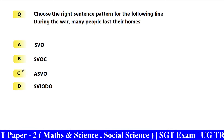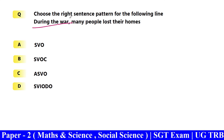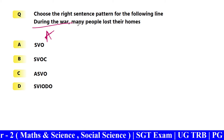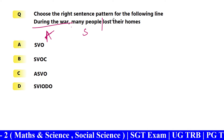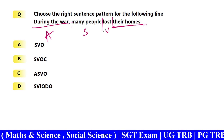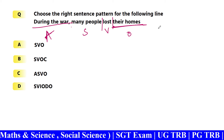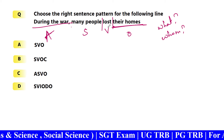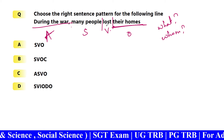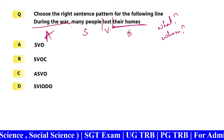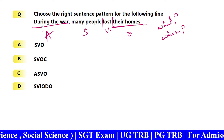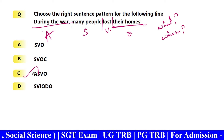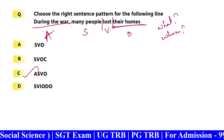Choose the right sentence pattern. 'During the war, many people lost their homes.' 'During the war' indicates time and place — it is an adverbial. 'Their homes' is the object — you can answer the question 'what?' Many people lost what? Their homes — the object. Time, place refer — so the pattern includes adverb of time/place. Option C is the answer.